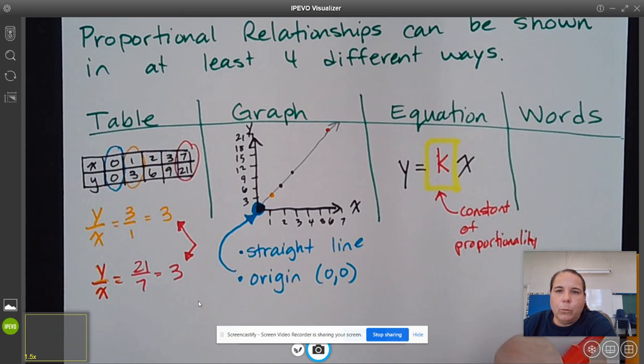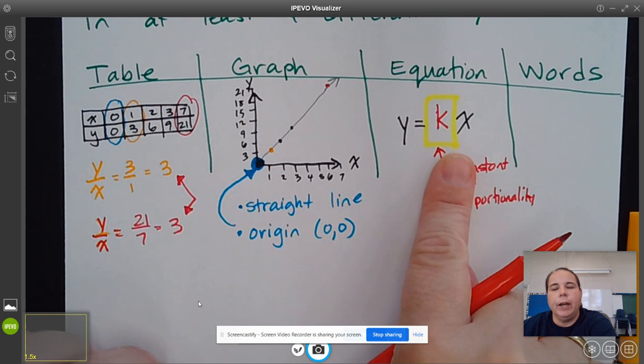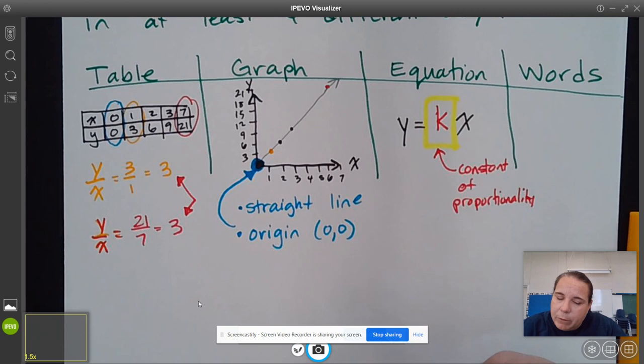We are going to realize that this constant of proportionality is also something that we can refer to as a rate of change. It is the slope of the line.